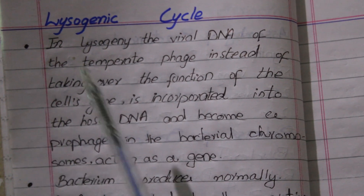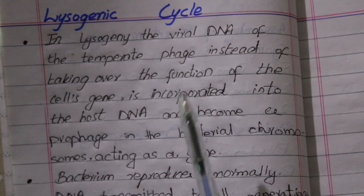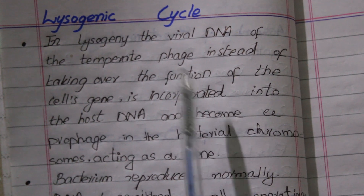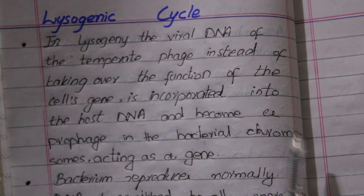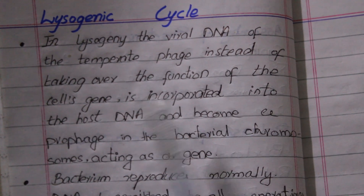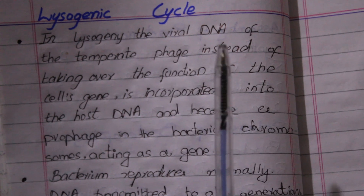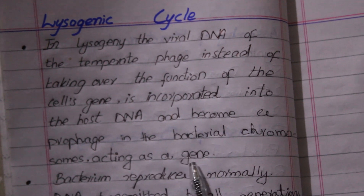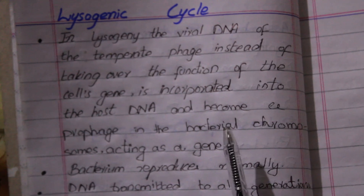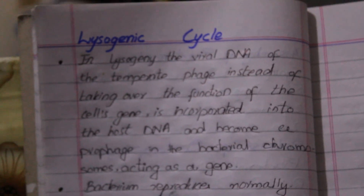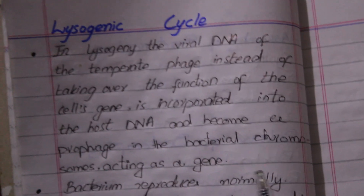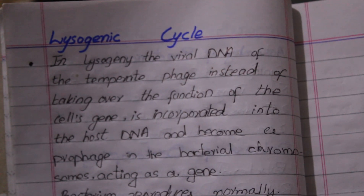The lysogenic cycle is that cycle in which the viral DNA is incorporated into the genetic material of the host DNA. It does not take over the machinery of the host. The viral DNA integrates into the host DNA and functions with the bacterial DNA. When the bacterial DNA replicates, the viral DNA is also copied with it.